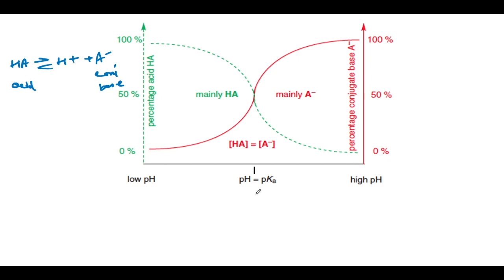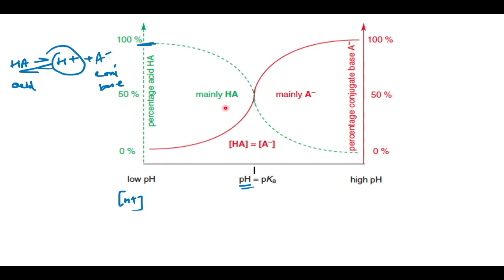At very low pH, the concentration of H⁺ is very high, so the equilibrium shifts backwards and protonates A⁻. The green line represents the concentration of the acid HA, and the red line represents the concentration of the conjugate base A⁻. At low pH, A⁻ stays mainly in the protonated form as HA. As pH increases from acidic to basic, HA is deprotonated and mostly gives A⁻.